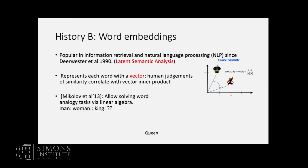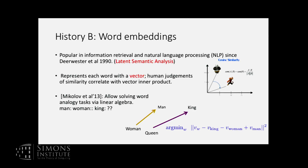Recently, a paper by Mikolov et al. from Google got a lot of attention, showing that using word embeddings of a special type you can solve word analogy tasks using linear algebra. For example: man is to woman as king is to queen. You take the difference between the vectors for man and woman, then for the word king, you look for the word whose difference vector is as close to that difference as possible. Among all 100,000 dictionary words, queen happens to be the best answer.